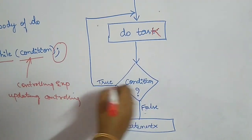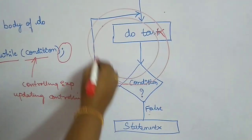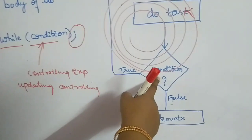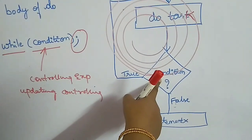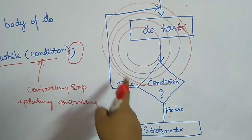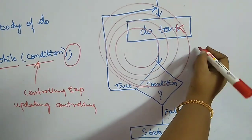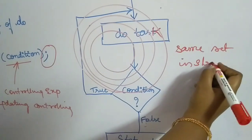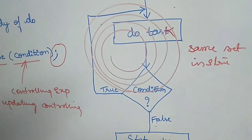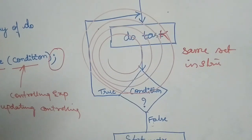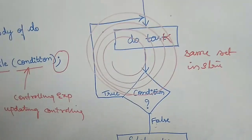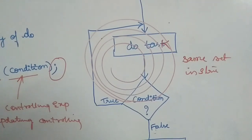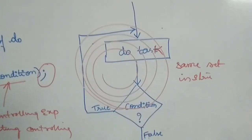The loop keeps executing until the condition becomes false — that is, until the termination condition is encountered. The same set of instructions are executed again and again. If you have such a scenario in your program, you can pick while or do-while, and based on whether entry or exit control is needed, you decide which to use.